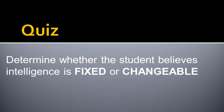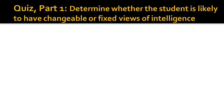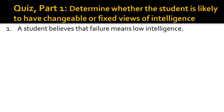Now that you have the basics, I'm going to quiz you to see if you understand these concepts. I'm going to give you 10 different situations and I want you to determine whether the student believes that intelligence is fixed or changeable. For each of the first five situations in part one, determine whether the student is likely to have changeable or fixed views of intelligence. Write down your answers as either changeable or fixed. Number one: a student believes that failure means low intelligence.